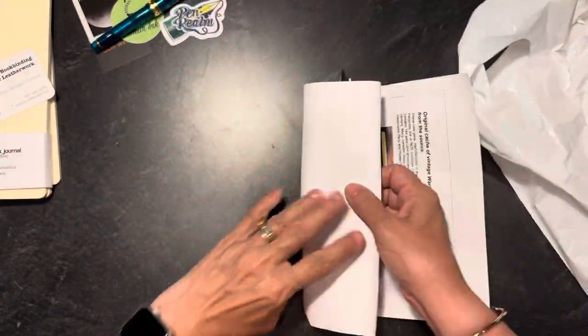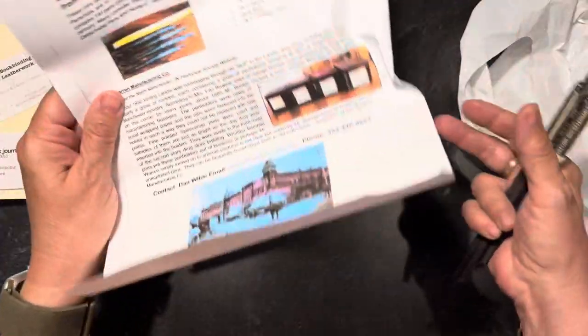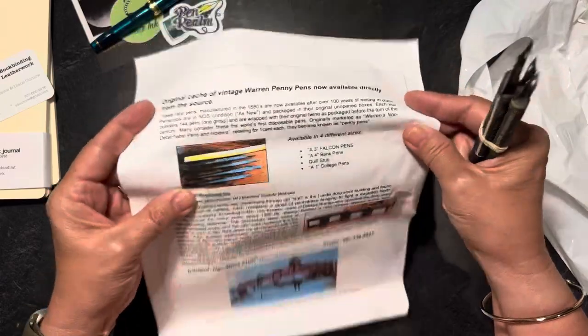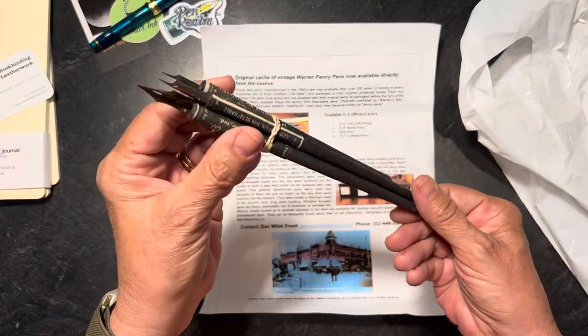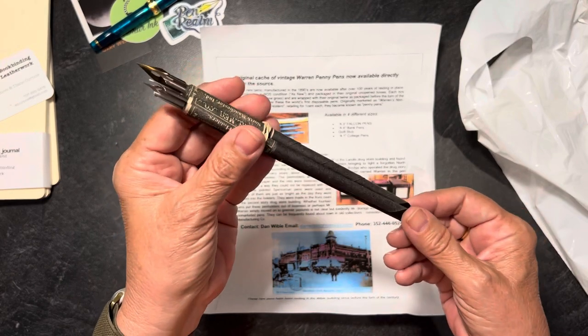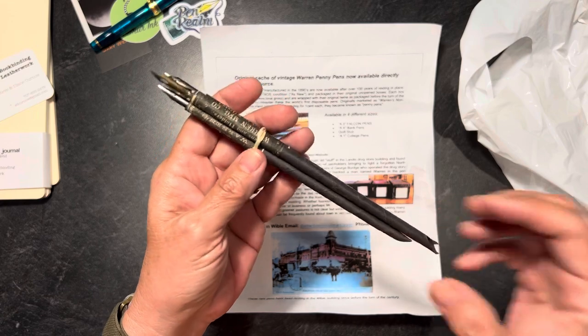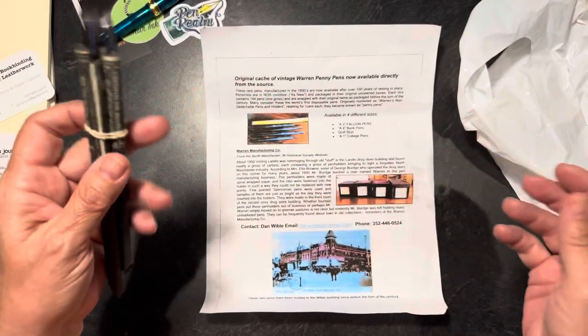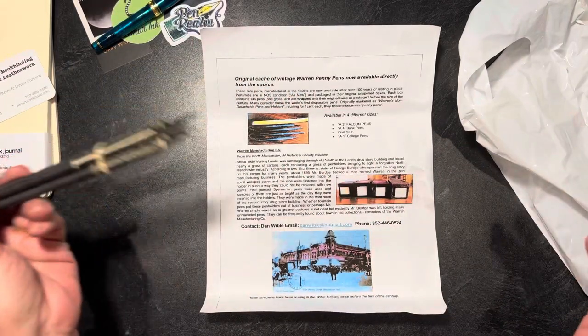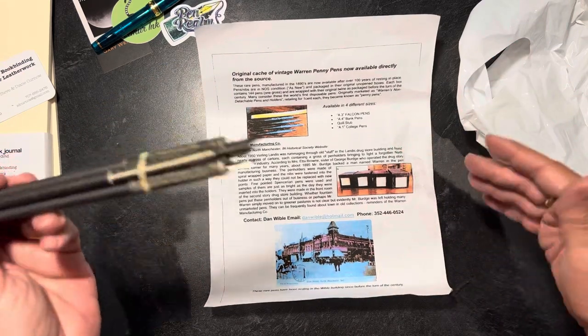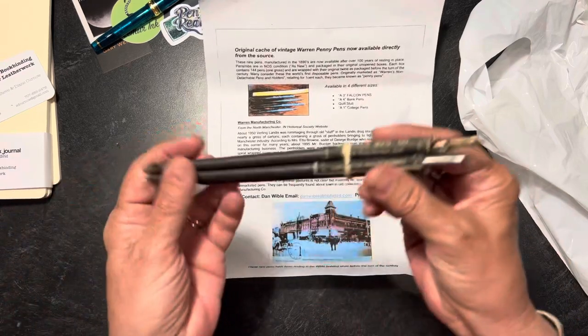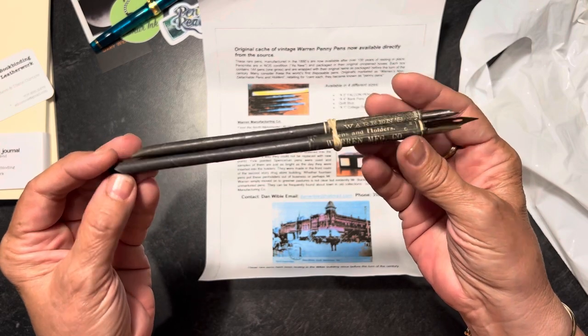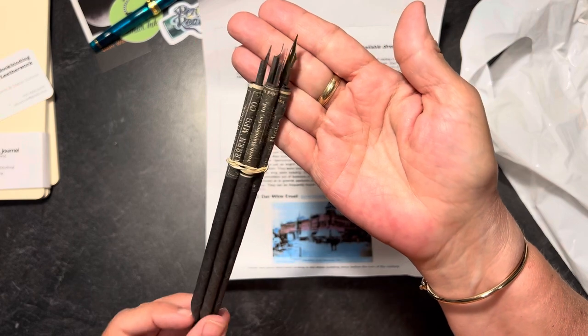And so another thing before I get to the main thing, we came across a table where they were selling these vintage Warren penny pens. So back in the 1890s, you could buy these fountain pen type things for a penny. They had ink there where you could test them. And my son and I, the artsy one, Drew, we really enjoyed these. So it's just like a dip pen. But I guess they found these in a building. I haven't read all the information, but the people that were talking to me said they bought this old historic building in Indiana and found all these pens there. Just like a dip pen. Manchester, Indiana.